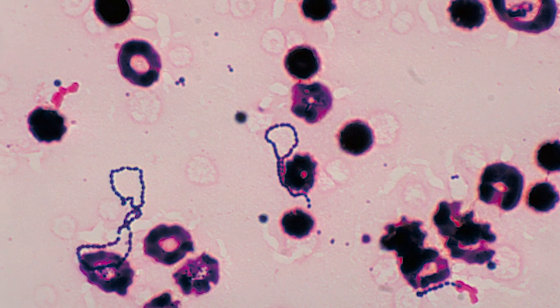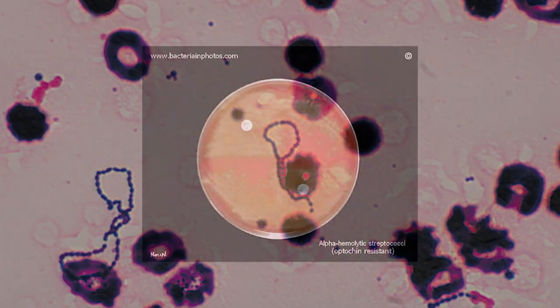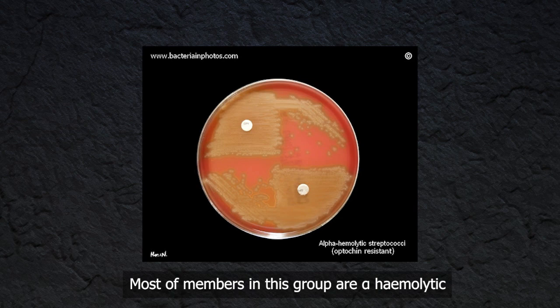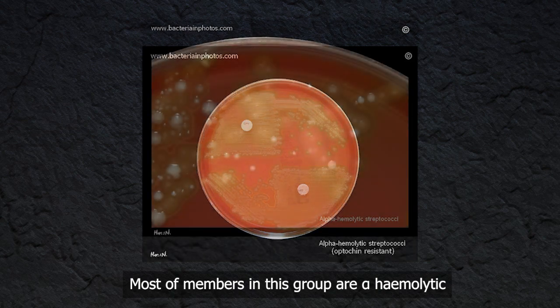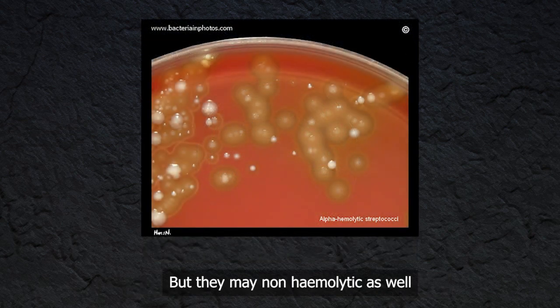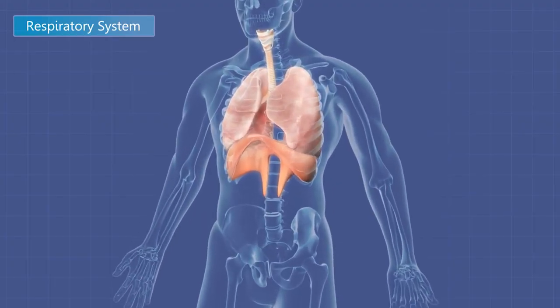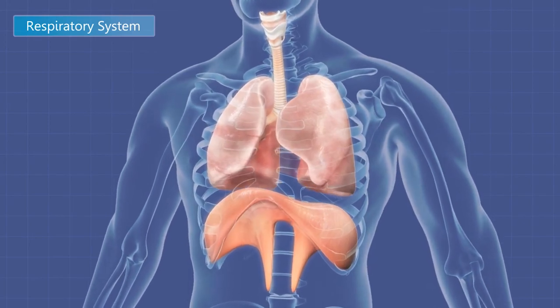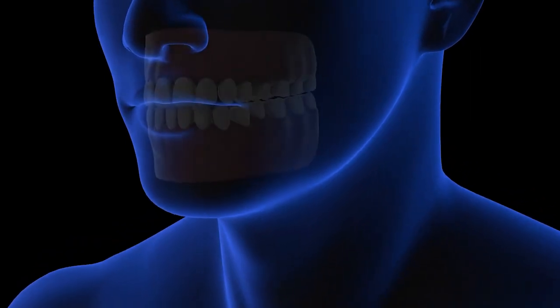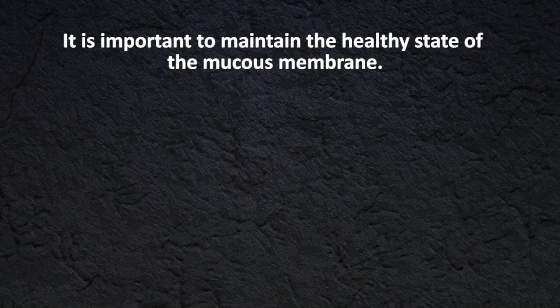Viridans streptococci are gram-positive cocci that occur in chains. Most of the members in this group are alpha-hemolytic, but they may be non-hemolytic as well. They lack both the carbohydrate antigen of pyogenic streptococci and the capsular polysaccharide of pneumococci. They can be found in the upper respiratory tract and mouth as normal flora and are important in maintaining the healthy state of mucous membranes.